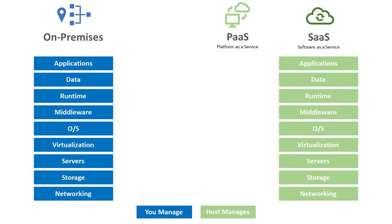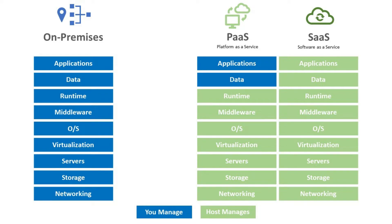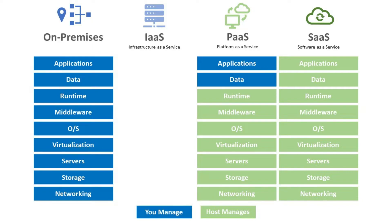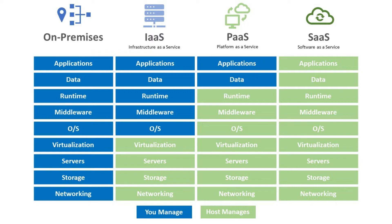With platform as a service, the service provider is responsible for everything except the application layer and the database. So you just take care of the application and the data. Then there is infrastructure as a service, which is one step below, in which the provider is responsible for networking, storage, servers, and virtualization, and you're responsible for everything else.